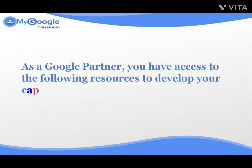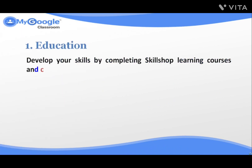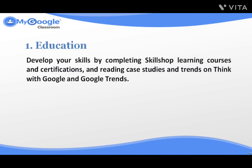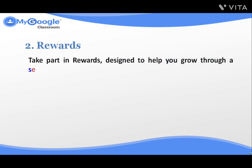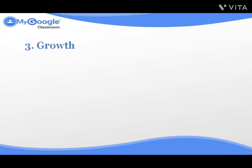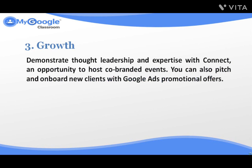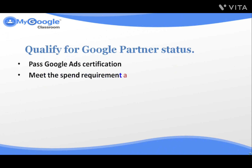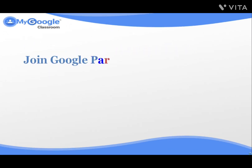As a Google partner, you have access to the following resources to develop your capabilities and help your clients succeed. Number one: Education — develop your skills by completing Skill Shop learning courses and certifications, reading case studies, and trending on Think with Google and Google Trends. Number two: Rewards — take part in rewards designed to help you grow through a series of challenges for acquiring new clients, optimizing client campaigns, or getting certified, with access to first-hand Google insight and exciting rewards. Number three: Growth — demonstrate thought leadership and expertise, host co-brand events, pitch and onboard new clients with Google Ads promotional offers. Qualify for Google partner status by passing Google Ads certification, meeting the spend requirement across your management account, and delivering strong client and company growth. Join Google Partners now by signing up using the account with admin access to your company's Google Ad Manager account.